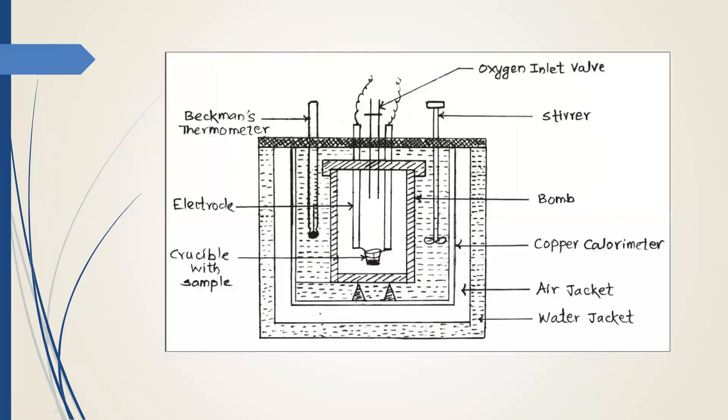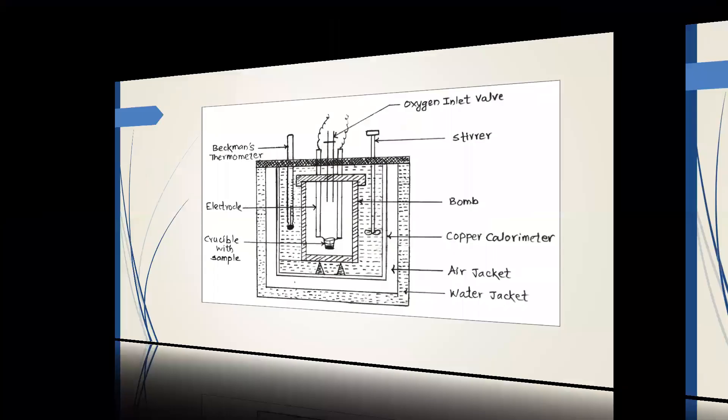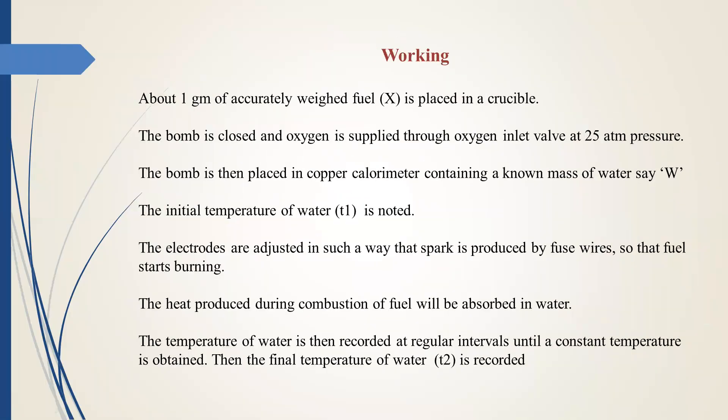We can diagrammatically represent bomb calorimeter in this way. About 1 gram of accurately weighed fuel is placed in a crucible.